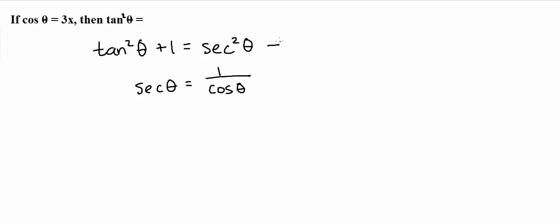So using this here, I'm going to isolate tangent squared theta and set it equal to secant squared theta minus 1. So all I did was subtract the 1 from both sides. So now all I really need to do is figure out what secant squared theta equals.